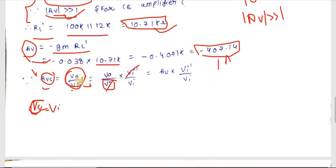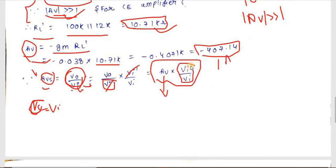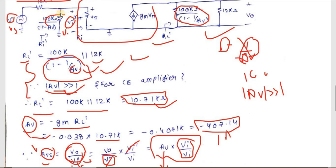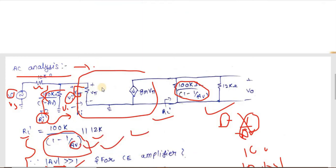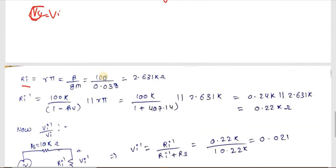First we find Ri = rπ = β/gm = 100/0.038 = 2.631 kΩ. Then Ri' is the parallel combination of rπ and the Miller input resistance 100k/(1 − Av).